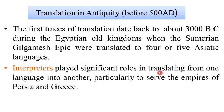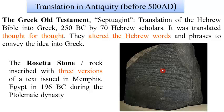The first piece of translation was the Gilgamesh epic, dating back to about 3000 before Christ. Interpreters at that time played an important role in establishing communication between the empires of that time, such as Persia and Greece. The earliest translation of the Hebrew Bible was performed by 70 Hebrew scholars who adopted the thought-for-thought strategy, altering Hebrew words and phrases to preserve the idea in Greek.